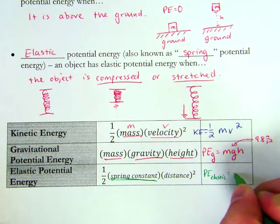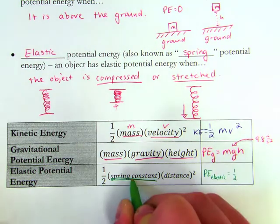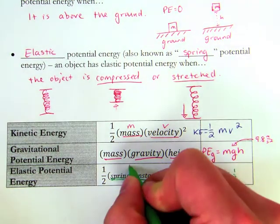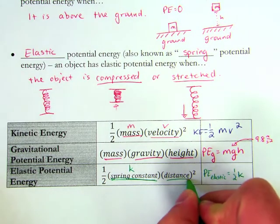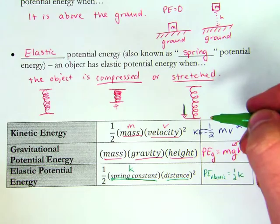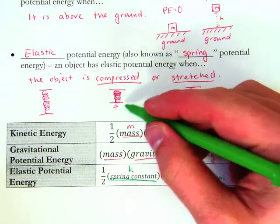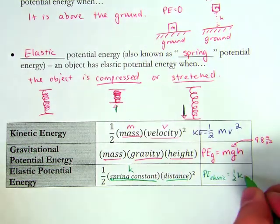So the potential energy of the elastic object, the elastic potential energy is going to be one-half the spring constant, we're going to pick the variable k. And for the distance here, that means the distance the object is stretched or compressed.